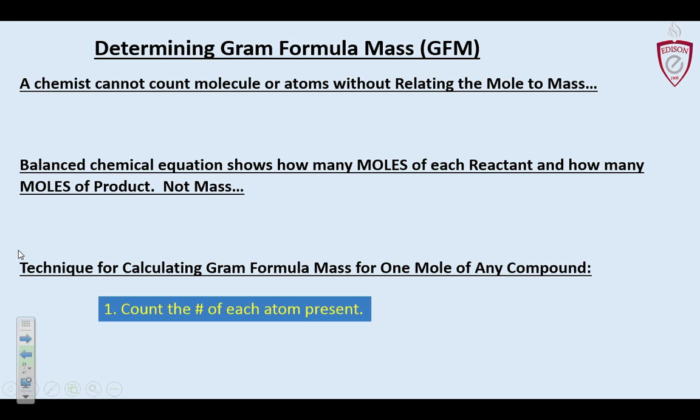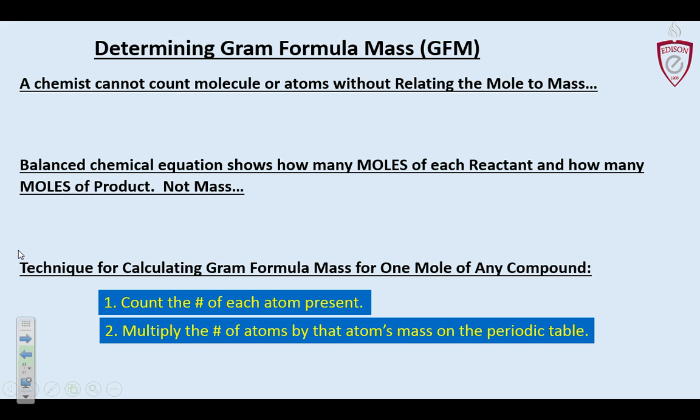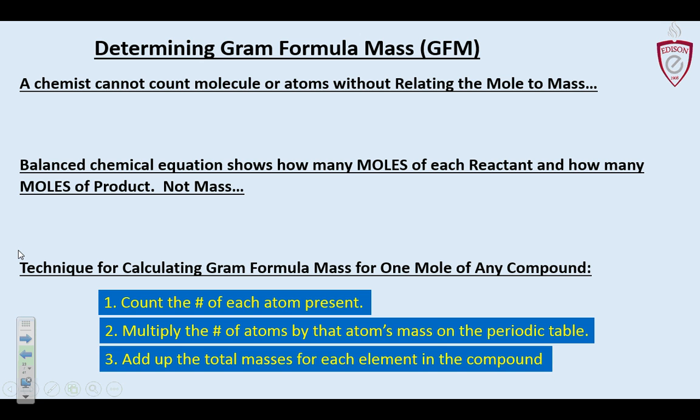Okay, so the technique. The first thing we're going to do is, in our compound, we need to count the number of each of our atoms. We'll be given a compound to work with. If there's a parenthesis we distribute; if there's not, then we just count the atoms — counting moles of atoms. Now, we're going to multiply the number of atoms by that particular atom's mass on the periodic table. That's the other shortcut to gram formula mass.